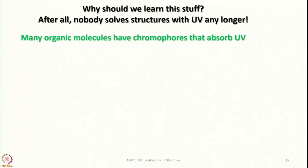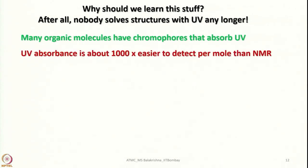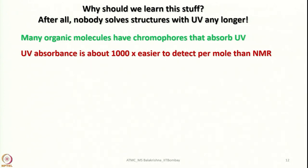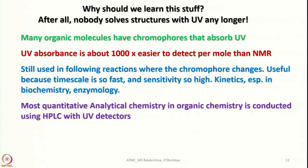So why should we learn this topic? Because many organic molecules have chromophores that absorb UV light, and UV absorbance is about 1000 times easier to detect per mole than NMR — very easy. It is still used in following reactions where the chromophore changes. It is useful because the time scale is so fast and sensitivity is so high. Kinetics, especially in biochemistry and enzymology, depend heavily on UV-visible spectroscopy for the same reason. Most quantitative analytical chemistry is still conducted using HPLC with UV detectors.